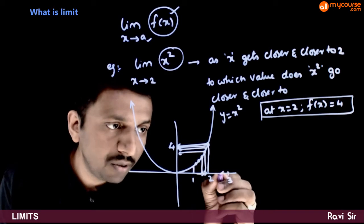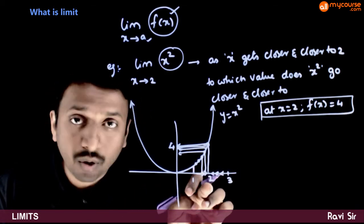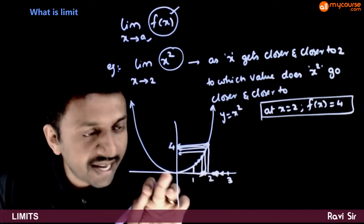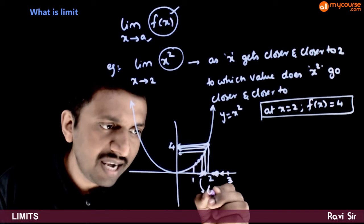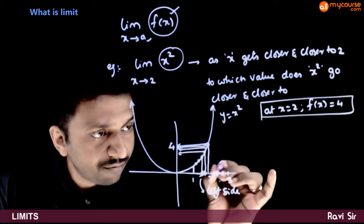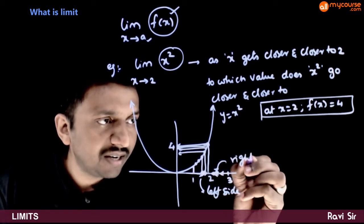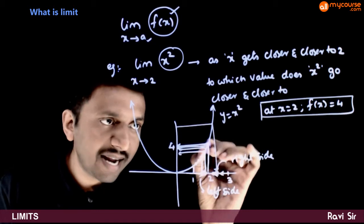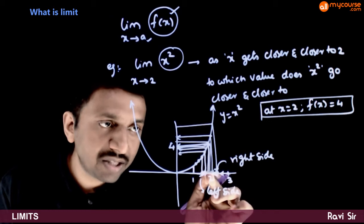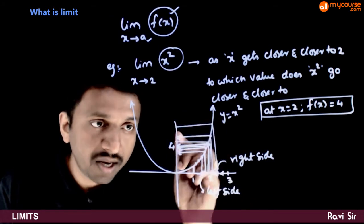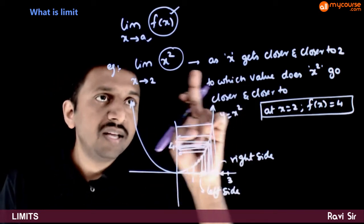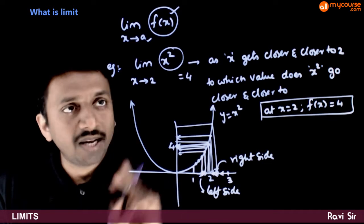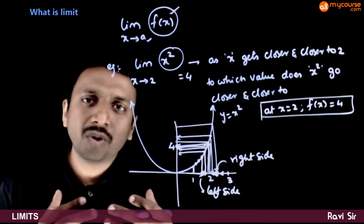x can go closer and closer to 2 from the right hand side also. On the number line, I can go from the direction of 1 or from the direction of 3. Whether I go from the right side or the left side, as my x goes closer and closer to 2, the value of y is going closer and closer to 4. So limit x tends to 2, x square is equal to 4. That means as x tends to 2, x square tends to 4.